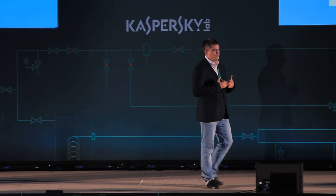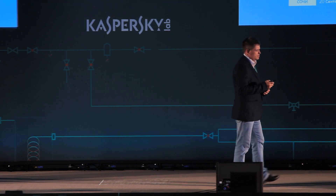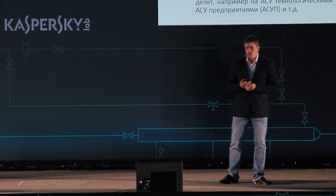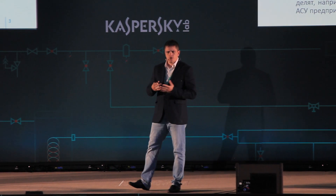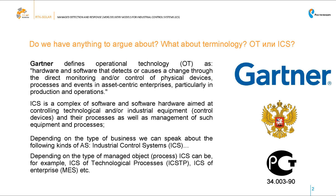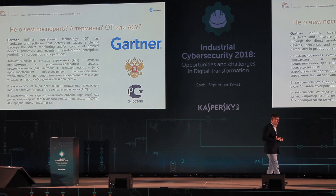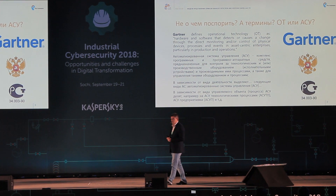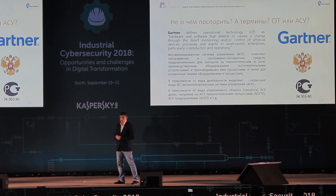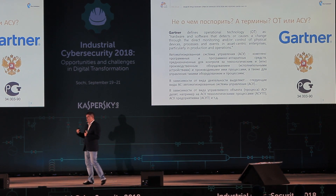We're going to talk about SOCs. One of the terms is called operational technology — also a term coined by Gartner. Some people say that this term is quite old, but it becomes very trendy right now, especially in English-speaking countries. We use more often the term ACS — automated control system. This term now officially has a definition because it was mentioned in federal law. That's why when we use certain terms, we need to know where we take them from.